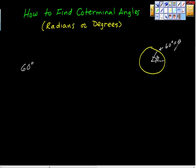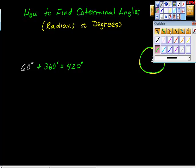So I'm suggesting to you that if I start here and I go around again, now I have a new angle, and that new angle is 60 degrees plus 360 degrees, which is, do some math with me, is 420 degrees, isn't it?